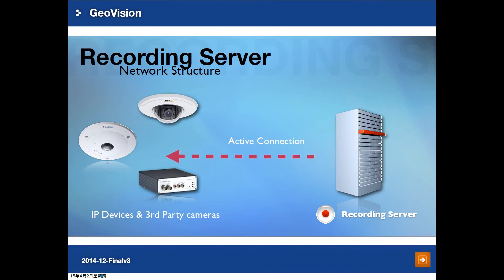There are two types of connections between the Recording Server and IP devices or cameras. First is the active connection, where the Recording Server will request a stream directly from the IP devices and third party cameras. This can be used in a normal LAN environment where the cameras have a static IP, and there will be no interruption.